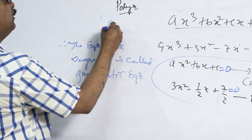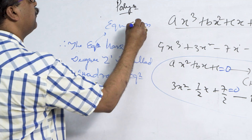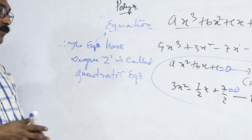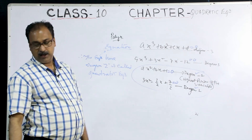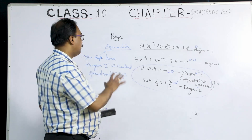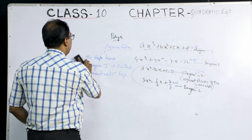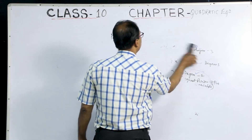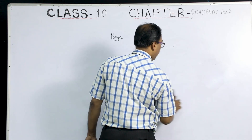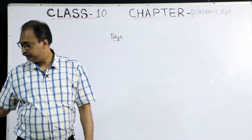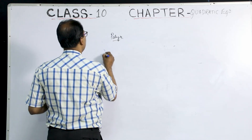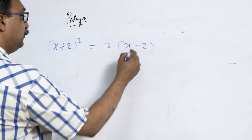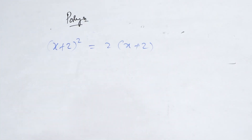Understood? The full form is 'equation'; we write the short form as 'eqn'. The equation of degree 2 is called quadratic equations. Equations of degree 3 are not quadratic. Now, from an expression, how do you know if it is quadratic or not? I will come to the criteria to check. Your first exercise might ask you to recognize quadratic equations mixed with other equations. For example, (x + 2)² = 2(x − 2). Is it quadratic or not? How do we check?